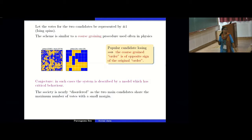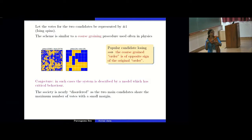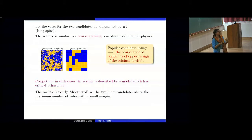So essentially what happens that when the popular candidate loses which happened in 2016 it is one example that the coarse grained order is of opposite sign to the original order. So we conjecture that such cases a system is actually described by a model which should be described by a model which has critical behavior. I am explaining this statement. So the society is nearly disordered. What happens that this kind of scenario can only happen when the number of votes obtained by the two candidates are very close otherwise it cannot happen. So that means it is almost disordered. So that is why we claim that it has to be a scenario in which you have this, it is very close to a critical behavior.